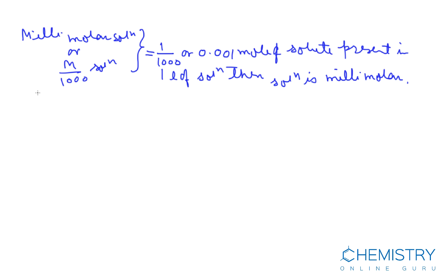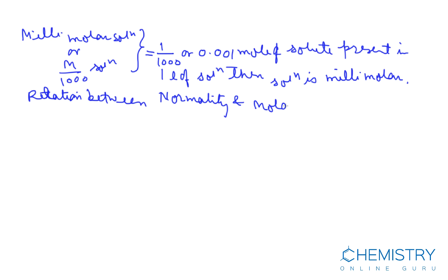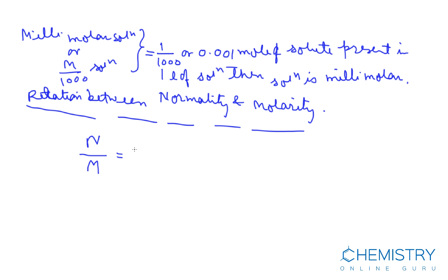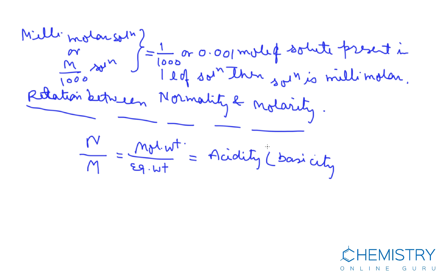Now, the relation between normality and molarity: normality is represented by capital N and molarity by capital M. N divided by M equals molecular weight divided by equivalent weight, which is also equal to acidity in the case of a base, and basicity in the case of an acid.